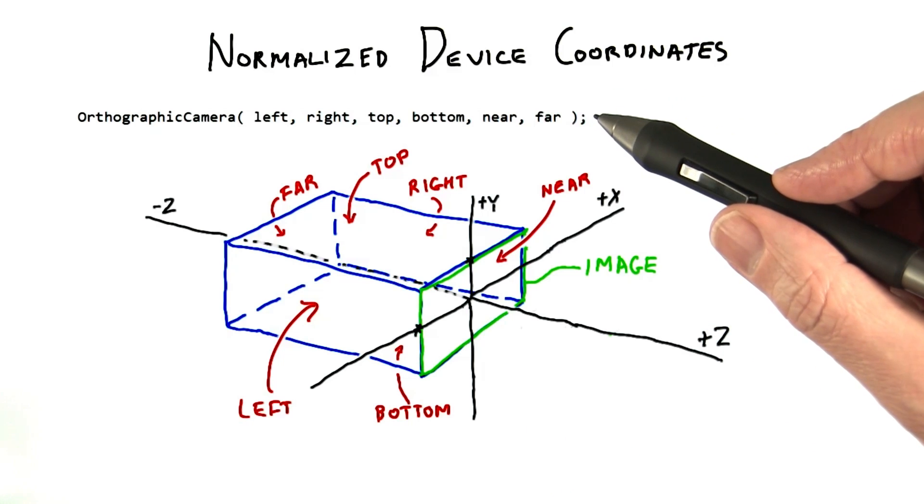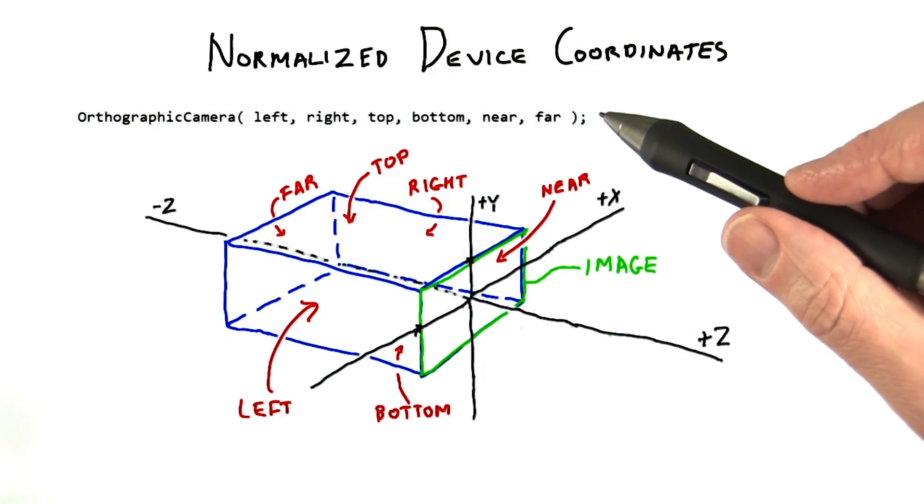As noted before, the orthographic camera's definition is to give a left, right, top, bottom, near, far set of values to define this box.